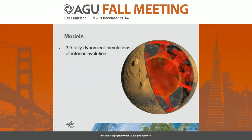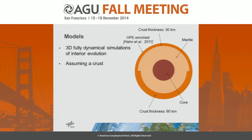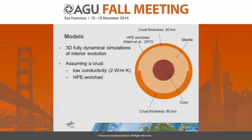We are performing 3D fully dynamical simulations of planetary interiors, in this case for Mars, and this is a typical output of our simulations. For all the models presented here, we assume a crust with a low conductivity compared to the mantle — we have varied this between 2 and 3 watts per meter Kelvin.